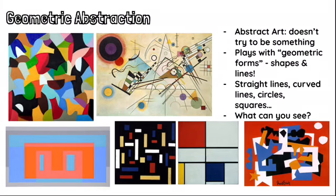Geometric abstract art plays with geometric forms — shapes and lines. You can see in all of these pictures that the artists have been playing with shapes and lines in fun and interesting ways: straight lines, curved lines, circles, squares. What other shapes can you see?